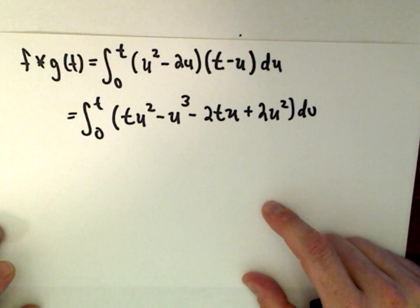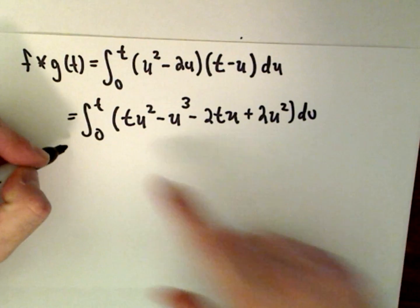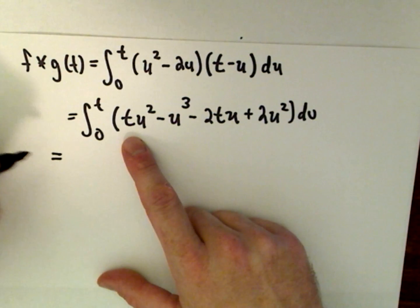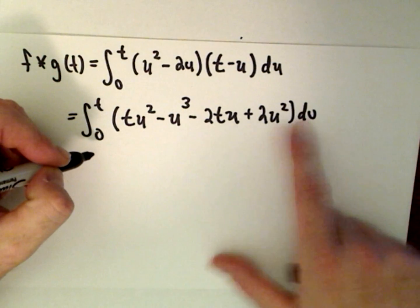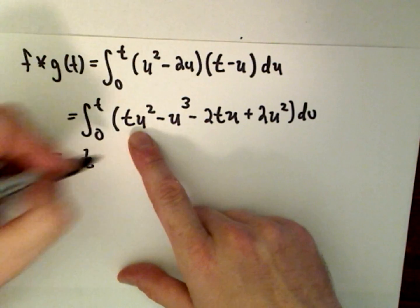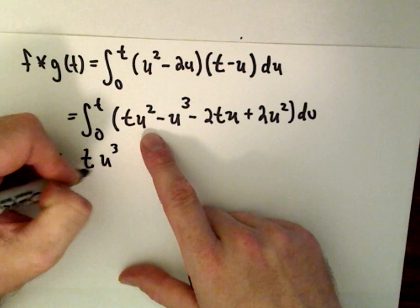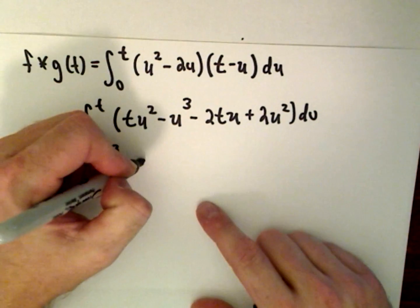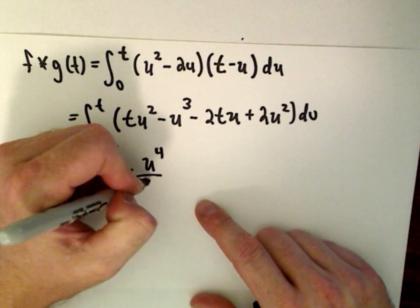If we integrate this with respect to u, we've got t, treating that like a constant, will have u to the third over 3, minus u to the third, so that'll be minus u to the fourth over 4, minus 2t, we'll treat that like a constant.